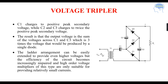Next is the voltage tripler. In this circuit, C1 charges to the positive peak secondary voltage while C2 and C3 charge to twice the positive peak secondary voltage. The output voltage is the sum of the voltages across C1 and C3, which is 3 times the voltage produced by a single diode. This ladder arrangement can be extended to provide even higher voltages, but the circuit efficiency becomes increasingly impaired, and high-order voltage multipliers are only suitable for providing relatively small currents. We have covered the voltage regulator, voltage doubler, and voltage tripler. Hope this is clear for everyone. If you find this useful please share it with others. Thank you.